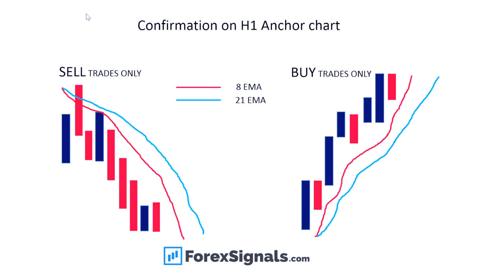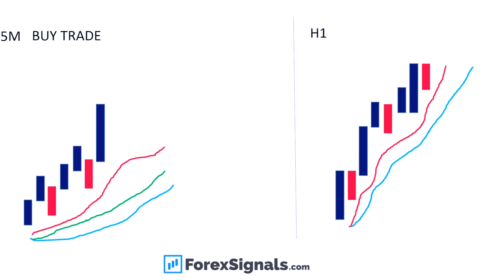In this example, it's the one-hour chart to determine whether we're going to be sellers or buyers. The 8 and the 21 moving averages are the ones we use. For sells, the 8 has to be below the 21 and price below both. For buys, the 8 has to be above the 21 and price above these moving averages. If price dips below the moving averages, the trade is not on. On this example one-hour anchor chart, price is above the 8 and 21, so we're looking for buy trades only.